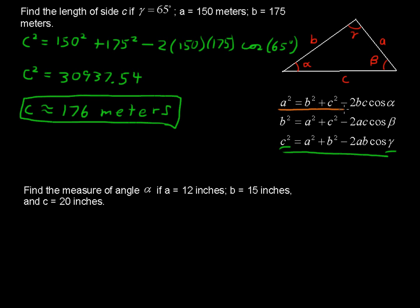So let's plug in what we do know. That's a is 12 inches. So 12 squared equals b squared, which is 15 inches. So 15 squared plus c squared, 20 squared, minus 2 times b, which is 15, times c, which is 20, times the cosine of alpha.